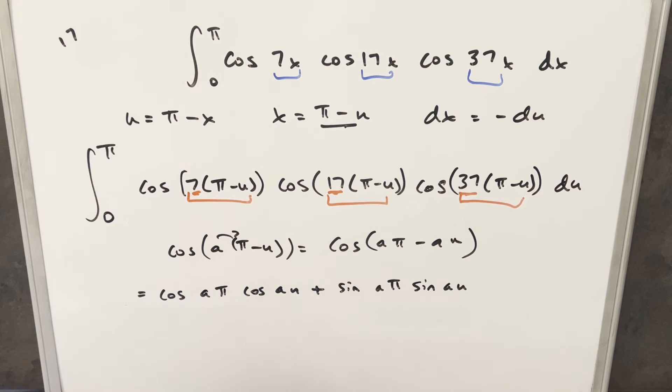But now when we try to simplify this, the important thing is that we know some things about our a value. It's not just any number. Our a value, we know it's going to be an integer, but we know it's actually going to be an odd integer. It doesn't really matter here for sine because sine, when a is anything times pi, any integer multiple of pi for sine is just zero.